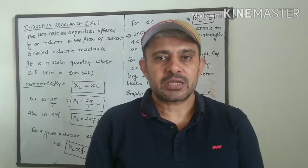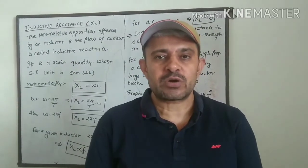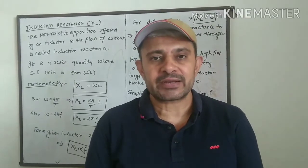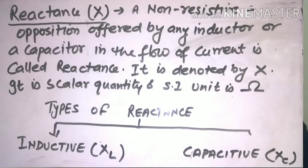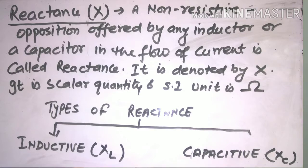Today we are going to cover a very important topic: reactance. Reactance is the non-resistive opposition offered by a circuit in the flow of current, or we can define reactance as the non-reactive opposition offered by an inductor or a capacitor in the flow of current. Reactance is denoted by X and it is a scalar quantity whose SI unit is ohm.